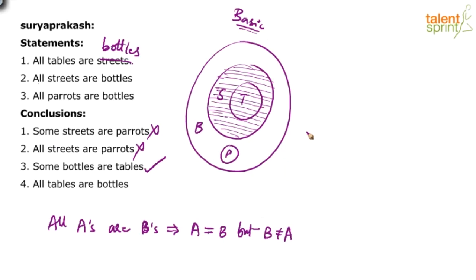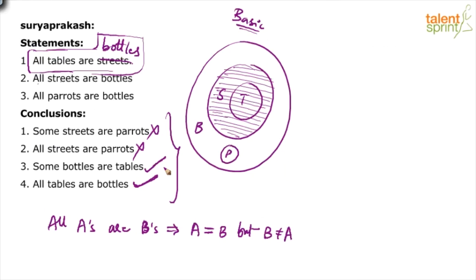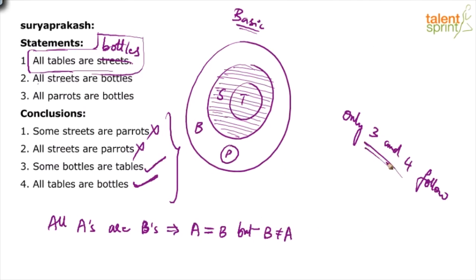Now look at conclusion 4: all tables are bottles. Yes — that's what we have derived. In the process of verifying conclusion 3, we have verified conclusion 4 already. All tables are bottles — so if you really look at it, this question has been answered even without the diagram. Venn diagram is the best method to solve syllogism questions, so practice drawing Venn diagrams, definite conclusions, and possible diagrams — and you must know when to do what. The answer to this question: only conclusions 3 and 4 follow.